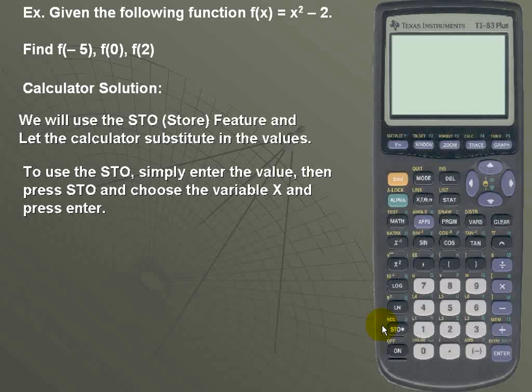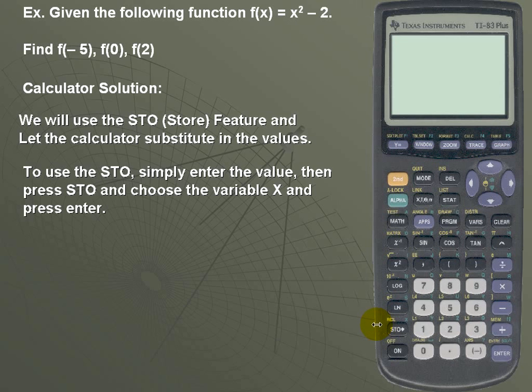To use the STO feature, simply enter the value, then press STO, choose your variable, and press ENTER. Next, enter the function and press ENTER to evaluate. So let's take a look at how it works.